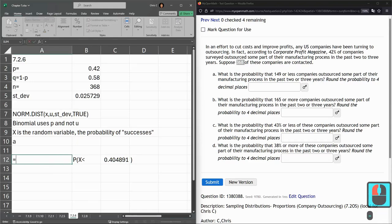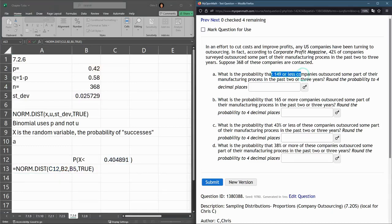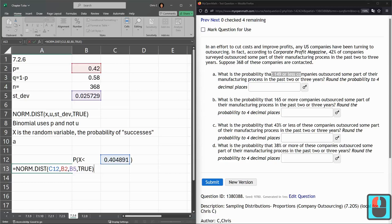Now I'm going to put the norm dist function here. So norm dot dist. I need X, which is the value we just typed. That right there. The mean is the actual from the population, the probability. And then standard deviation we just computed, and we're going true. And remember, the normal distribution always tells you that value or less. So it'll work perfectly for part A. Hit enter.